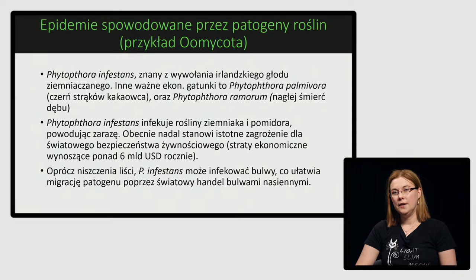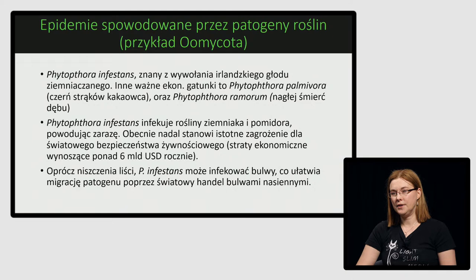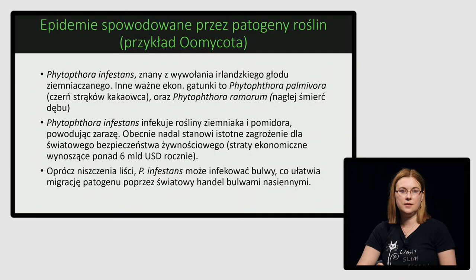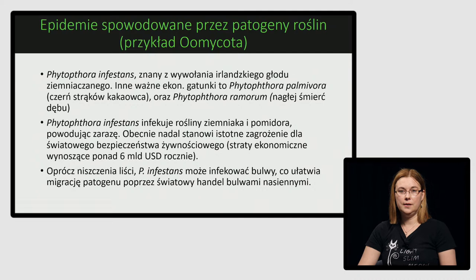Phytophthora infestans został zawleczony z Ameryki Północnej do Europy, do Irlandii, i w pierwszym roku spowodował kilkadziesiąt procent strat, a w kolejnych latach nawet 100% zniszczeń upraw ziemniaka. To był środek XIX wieku. W wyniku głodu umarło milion Irlandczyków, kolejny milion wyemigrował za granicę, a po zakończeniu głodu jeszcze pół miliona ludzi umarło.